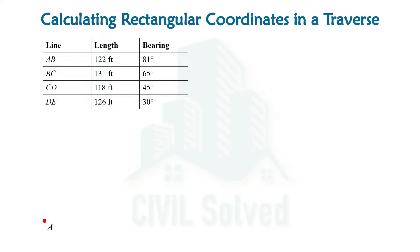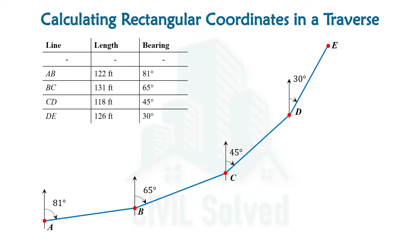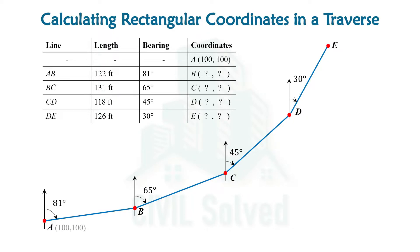Starting with point A, we have an AB line with a bearing of 81 degrees, BC line with 65 degrees as the bearing, CD line with 45 degree bearing, and DE line with 30 degree bearing. In this traverse we have been given the coordinates of point A, and the coordinates of B, C, D, and E are required.